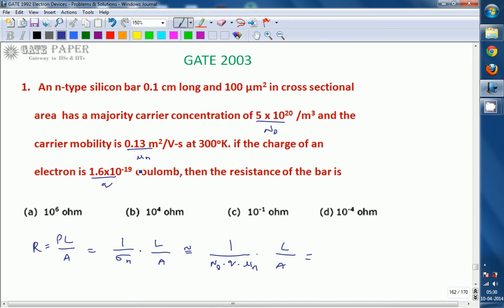Next, the L value is 0.1 cm, and this is the A value, the area. So everything is given.